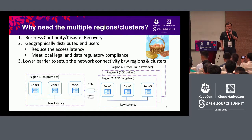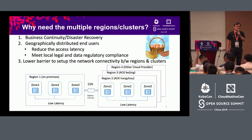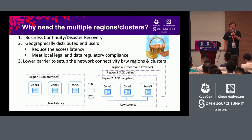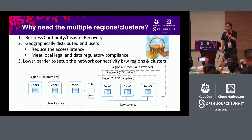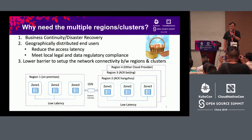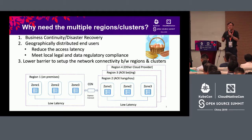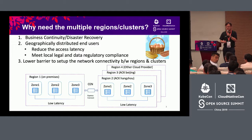Most of you might ask: why do we need multiple regions or clusters? On Alibaba Cloud, we have multiple clients, and based on their feedback, I summarized three categories of responses. The first is business continuity and disaster recovery — we need to avoid problems caused by a single point of failure, avoid putting all apps in one basket, and ensure stability of operation. That's why we need multi-region cluster management.